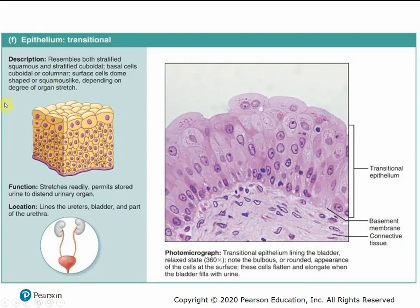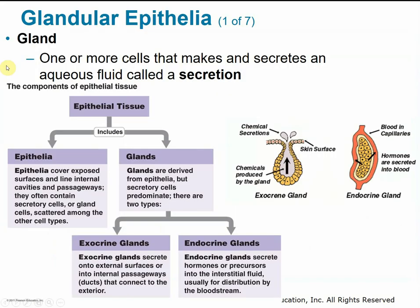Transitional epithelial tissue is able to change shape, resembling either stratified squamous or stratified cuboidal depending on how much the tissue is stretched. It is found in places like the bladder, where we want the organ to stretch and distend to hold urine. Glandular epithelial tissue is one or more cells that make and secrete an aqueous fluid called a secretion — an easy example is a sweat gland. There are two types of glands: exocrine glands secrete directly onto the body surface or body cavity, while endocrine glands secrete hormones directly into the bloodstream.